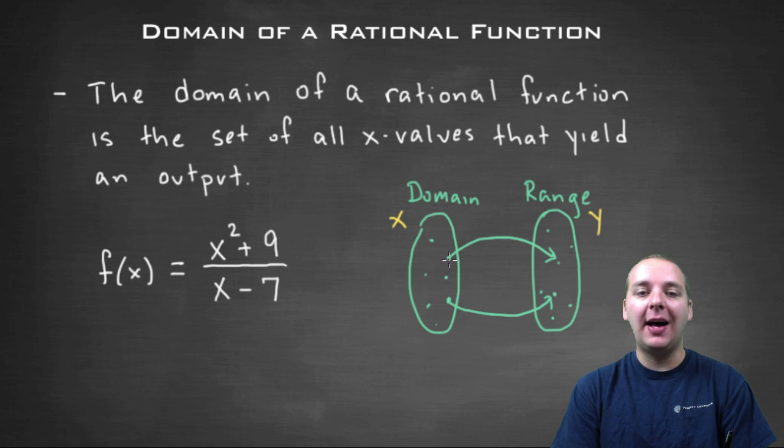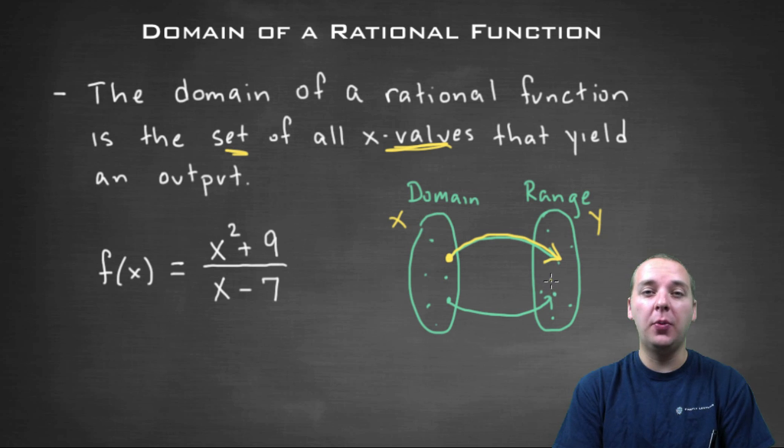And so when they ask you to find the domain for a rational function, what they want is they want you to find the set of all the x values that would yield an output, which means that would just give you any y value in the range. It doesn't even matter what it is.